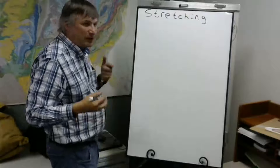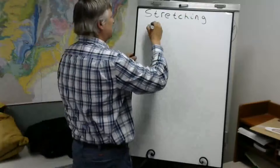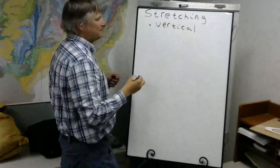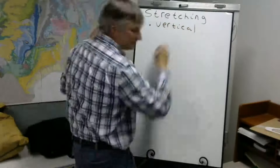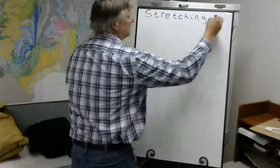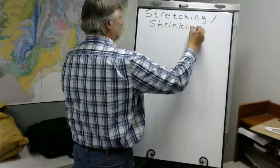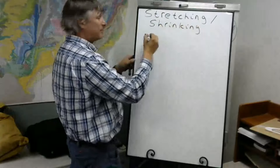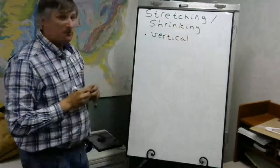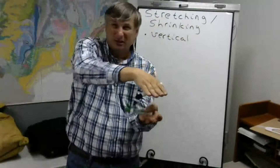We're going to work with our friend here, the y equals x squared function. Now vertical stretching means you're doing this — pulling it up. Vertical shrinking means you're doing this, like you're squishing it down.